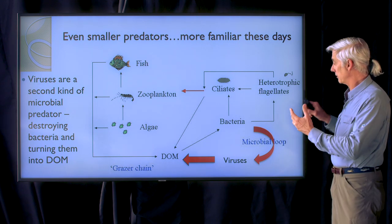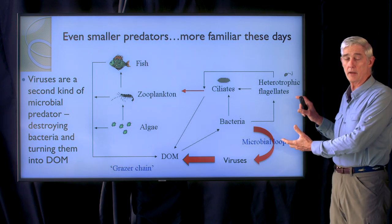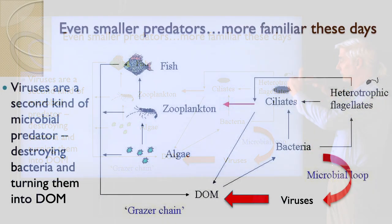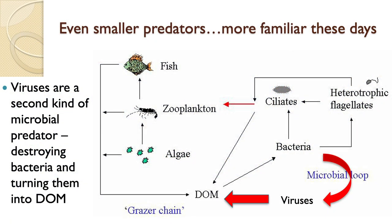But there's another aspect of the life of bacteria that we have to take into account. It's not just these larger cells that are predators on bacteria, but smaller ones as well — the viruses — which are active predators on bacteria, attaching to them and killing them and changing the dynamics of these populations.